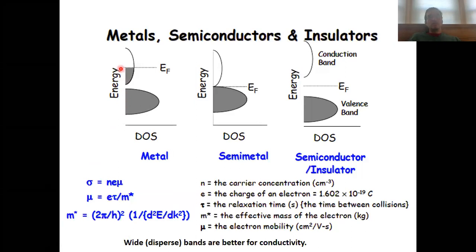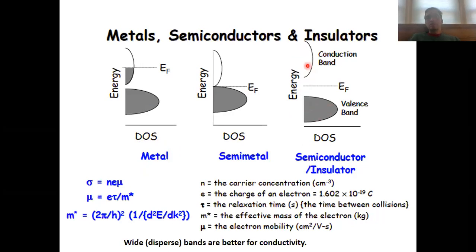In one case, the Fermi level cuts a band, and then we have a metal with metallic conductivity. In the other case, we have a band gap in between the valence band and the conduction band, and in this case we have either a semiconductor or an insulator, depending on how large that band gap is.